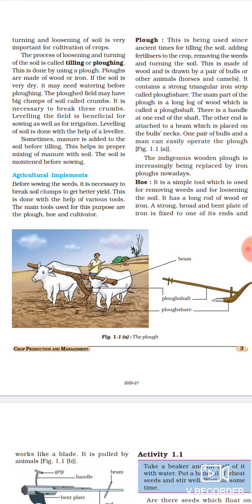Ab ye clumps ko kaise toda jata hai, kaise break kiya jata hai - kuch tools ki help se. The main tools used for this purpose are the plow, hoe and cultivator. Teen implements use mein liye jate hai. First, plow, jo ki hum first process mein, yani ki preparation of soil mein padh chuke hai. Second is hoe, jiske baare mein hum aage padhenge, aur cultivator ke baare mein bhi hum aage is chapter mein padhenge.